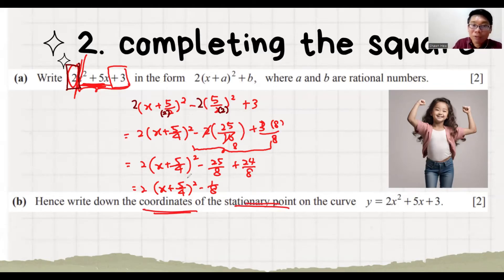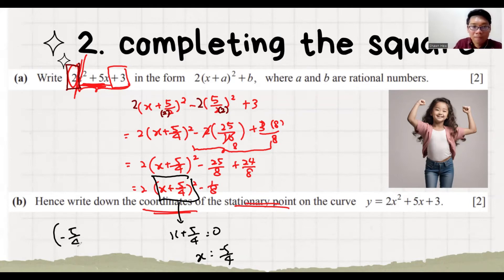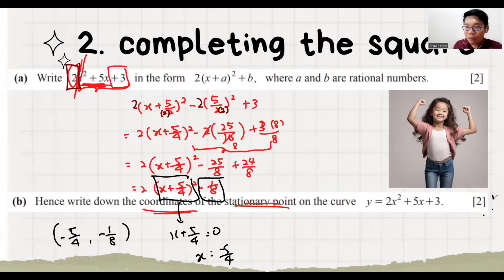This part determines the x value: x plus 5 over 4 equals 0, so x equals negative 5 over 4. The y value is directly copied from the constant, which is minus 1 over 8. That successfully gains the 2 marks.